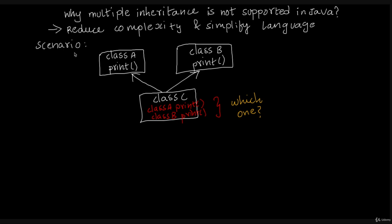Let's take a look at a scenario. This is called multiple inheritance. There are two parent classes: class A and class B. These two parent classes have a derived class called child class. This child class inherits class A properties and class B properties.